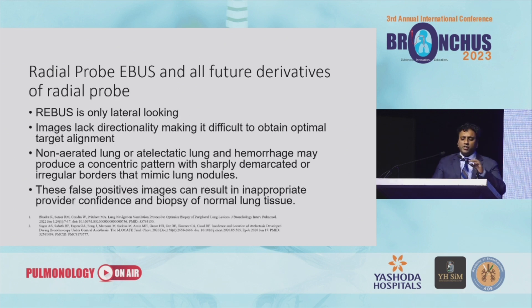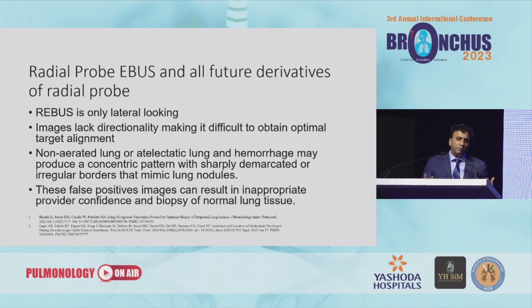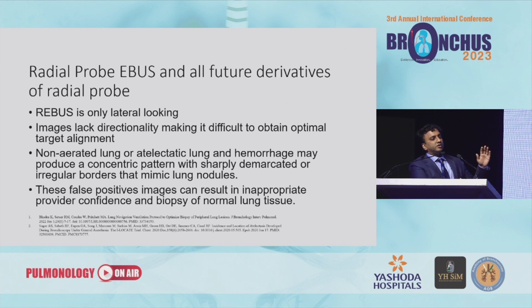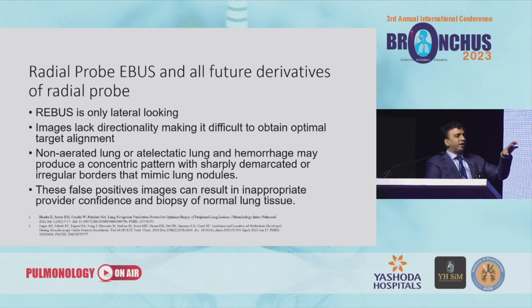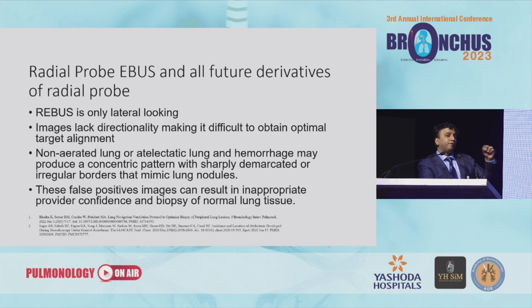When I was training about 10 to 15 years ago, radial probe EBUS was the only form of imaging we had. It was considered real-time — it is real-time — but there are major problems with EBUS. One is that it's just lateral looking; you can't look forward. The images lack directionality, so even if you see an eccentric view, you don't know which way to go. Non-aerated or atelectatic lung or hemorrhage can give you a false positive, and you'll end up biopsying normal tissue with a non-diagnostic result.